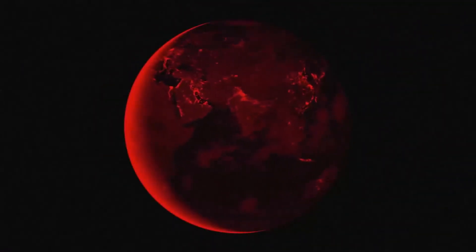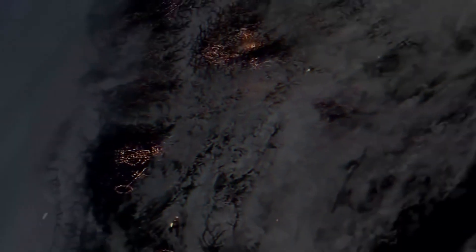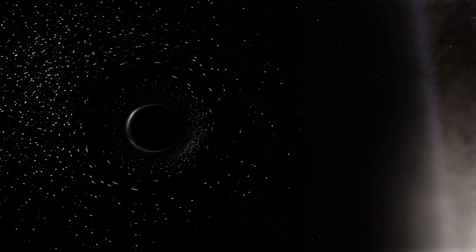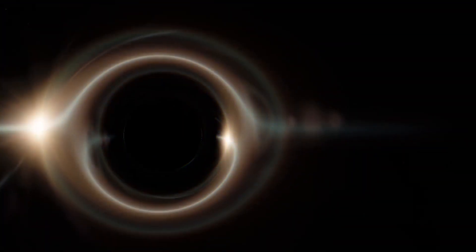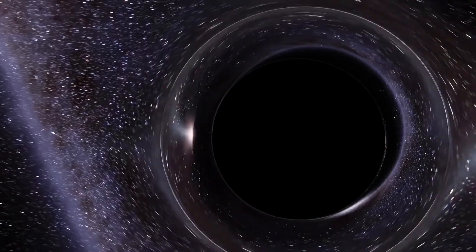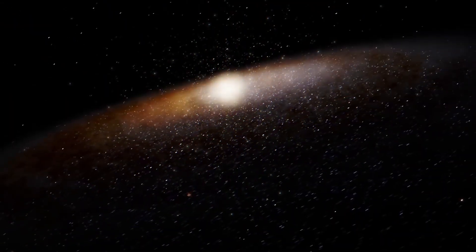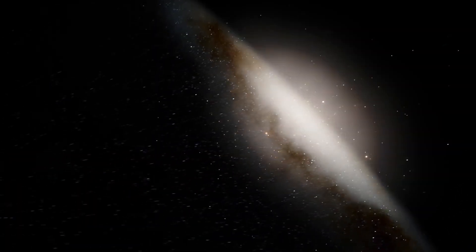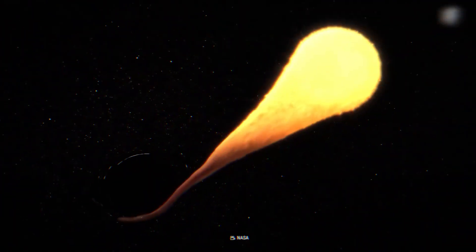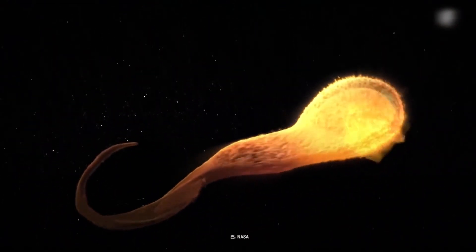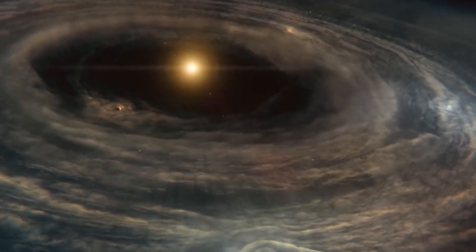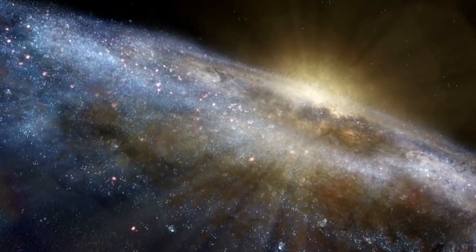A black hole can be formed by the death of a massive star. When such a star has exhausted the internal thermonuclear fuels in its core at the end of its life, the core becomes unstable and gravitationally collapses inward upon itself and the star's outer layers are blown away. And that's how a black hole is formed. Amazing things happen inside the black holes. Mysteries of the black holes are actually attractive.